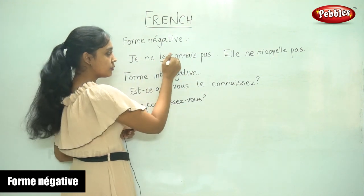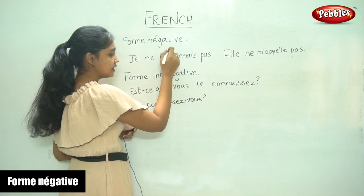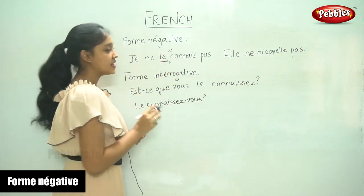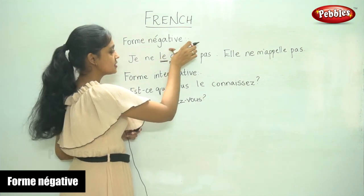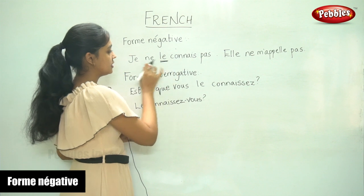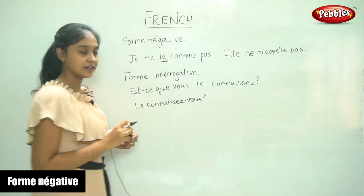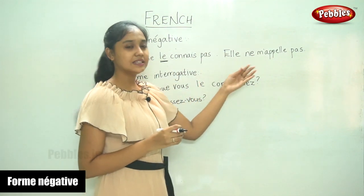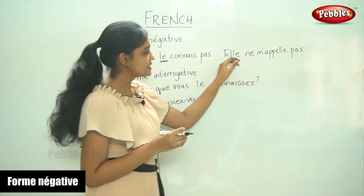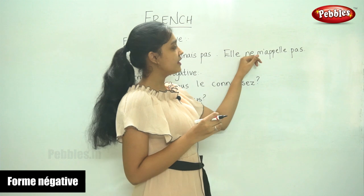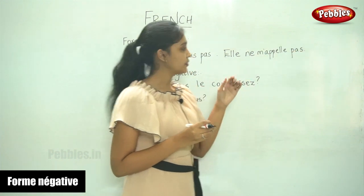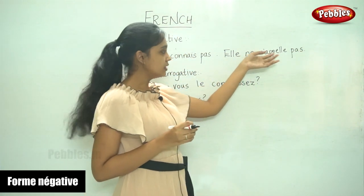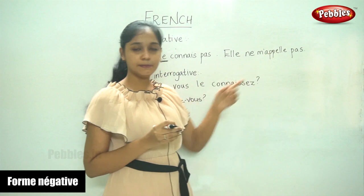Normally, we would add 'ne' here, but in this case 'ne' is placed before the pronoun. Similarly, the next sentence: 'elle ne m'appelle pas' — so 'ne m'appelle pas', that is how we write the negative form.